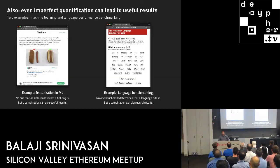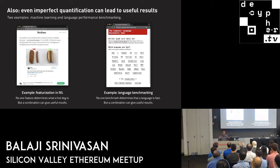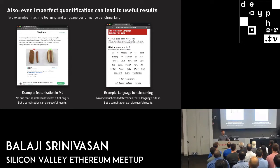Two more points. One: even imperfect quantification can lead to useful results. Hot Dog or Not Hot Dog from Silicon Valley is actually a very sophisticated machine learning application. No one feature determines what a hot dog is — it's all these imperfect heuristics, but collectively they bring this fuzzy notion into being. Similarly, the benchmarks game website is very carefully phrased: it doesn't say which programming language is fastest, just like we don't say which blockchain is the most decentralized. It says which is fastest on this toy benchmark — which blockchain is most decentralized on this benchmark. Benchmarks are flawed, but a collection of benchmarks can give useful results.